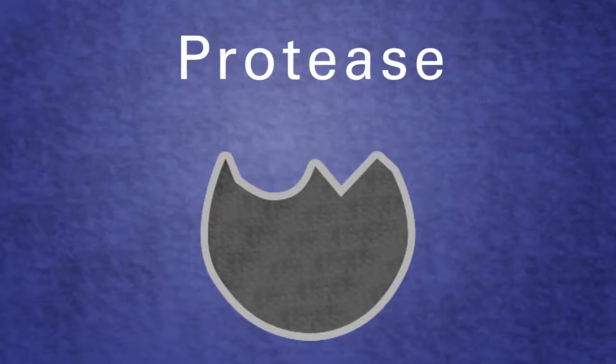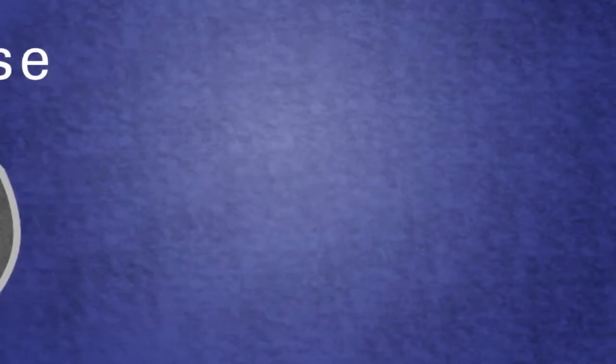We can tell if something is an enzyme just from its name. Most enzymes have the suffix "-ase". The prefix tells us what that enzyme is specific to.